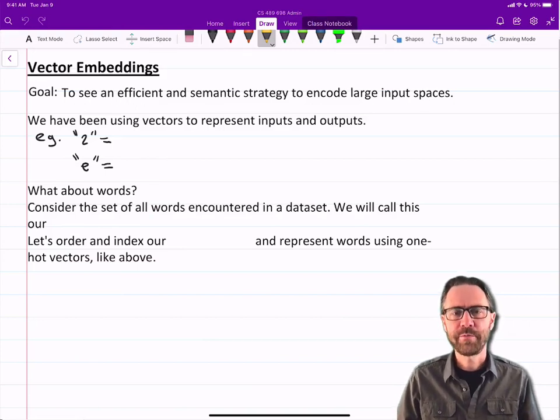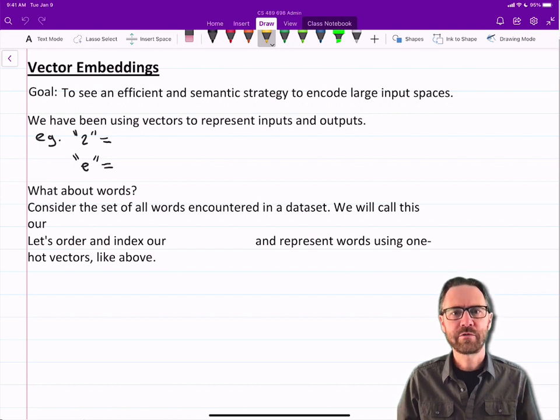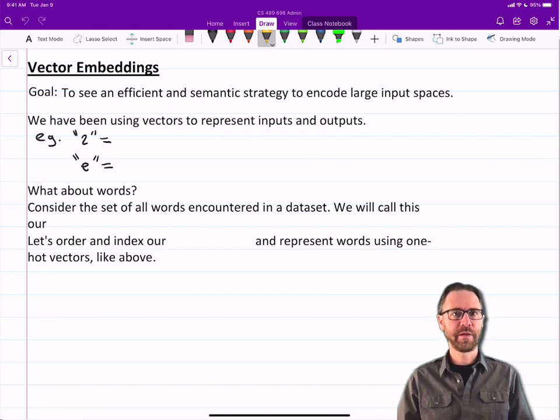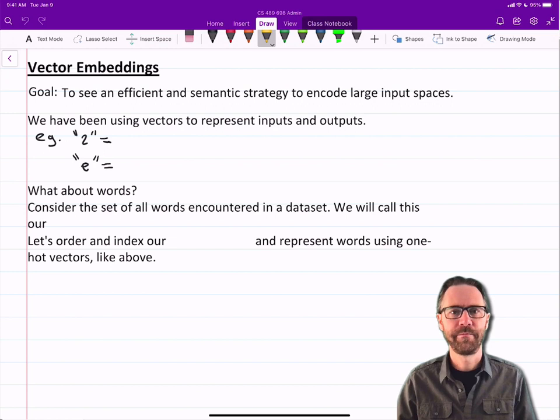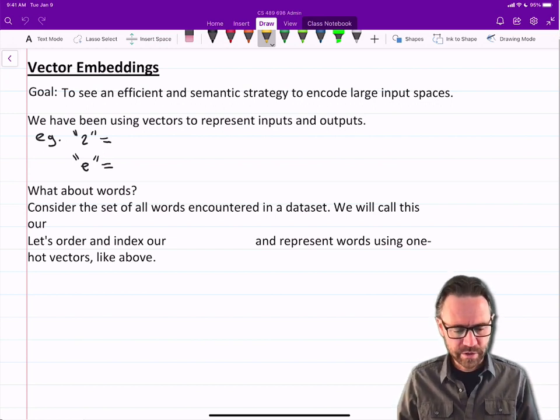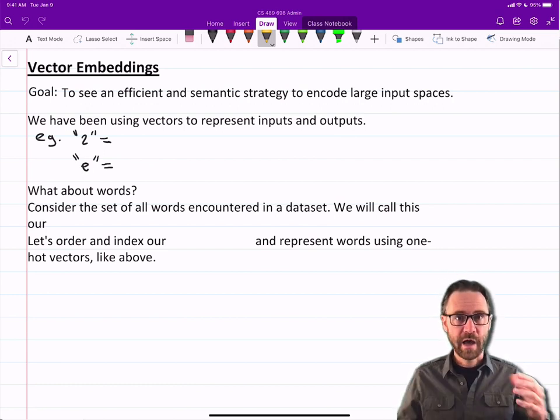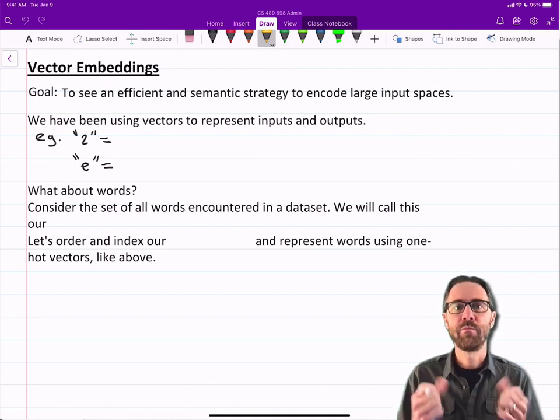In this video I want to describe to you vector embeddings. A lot of what I'm going to describe today will remind you a bit of autoencoders. In fact, autoencoders are the name of the game here, but we're going to use autoencoders for a particular function. The goal here is to see an efficient and semantic strategy to encode large input spaces. How can we re-represent our inputs into a format that's more useful?